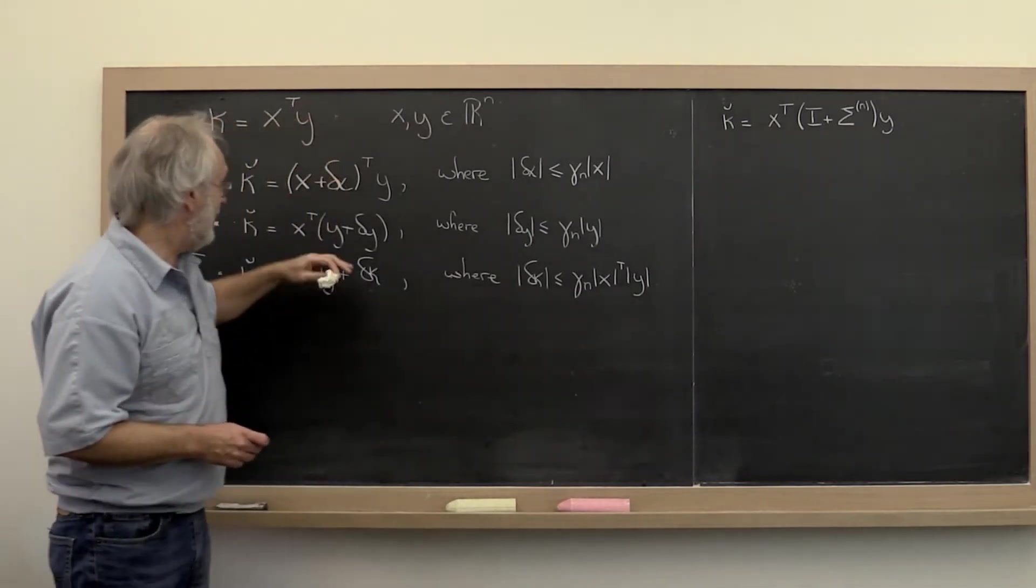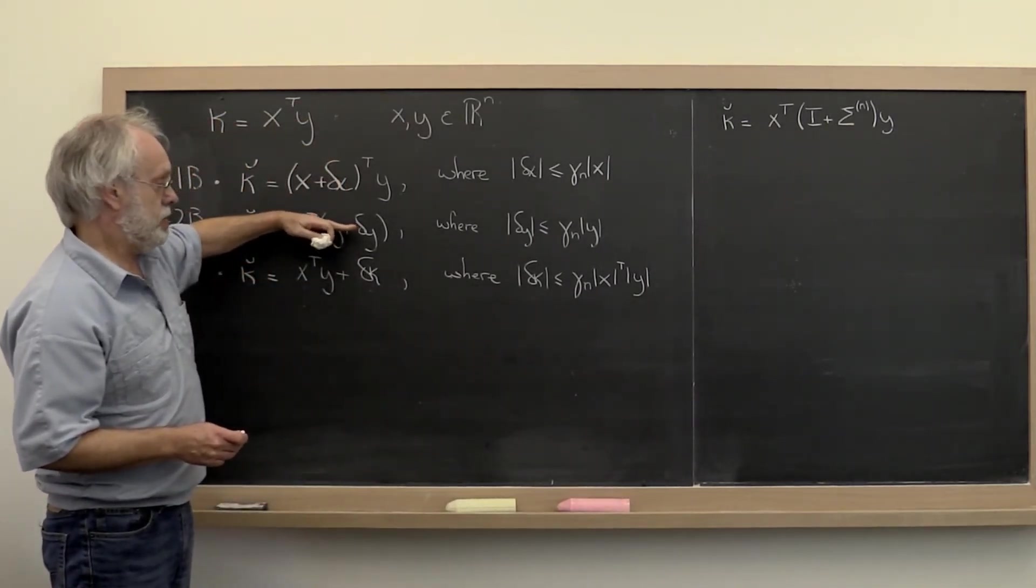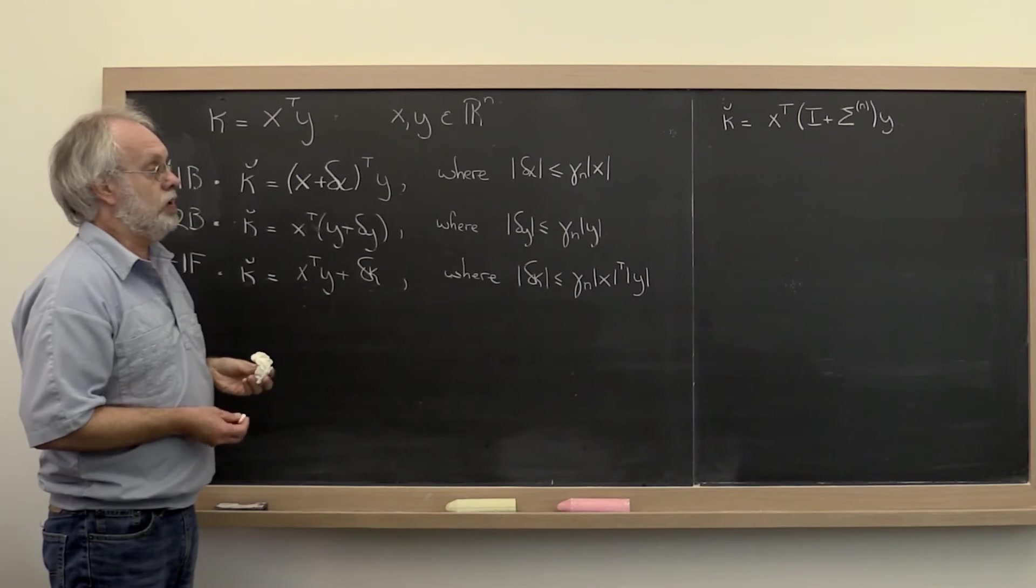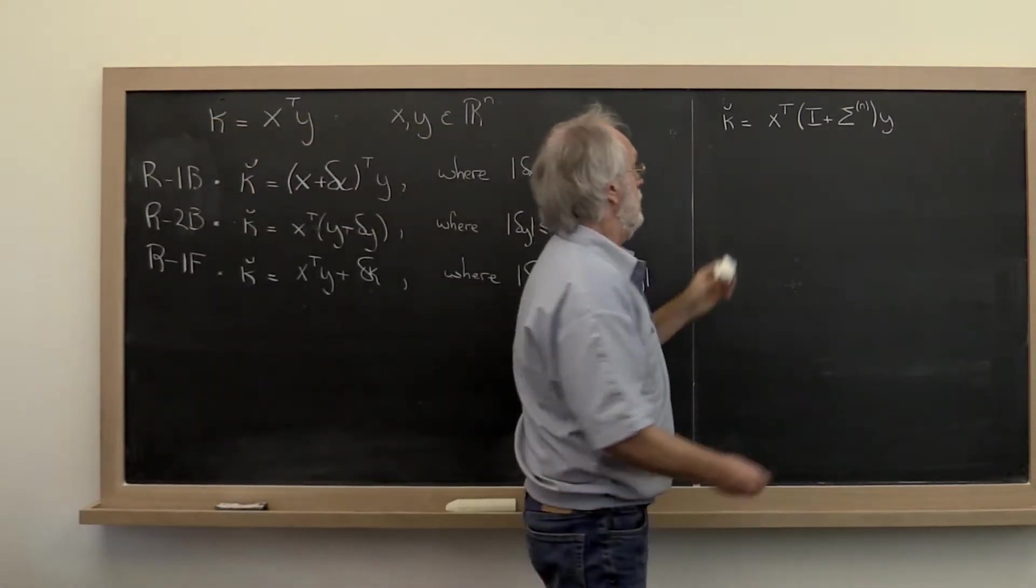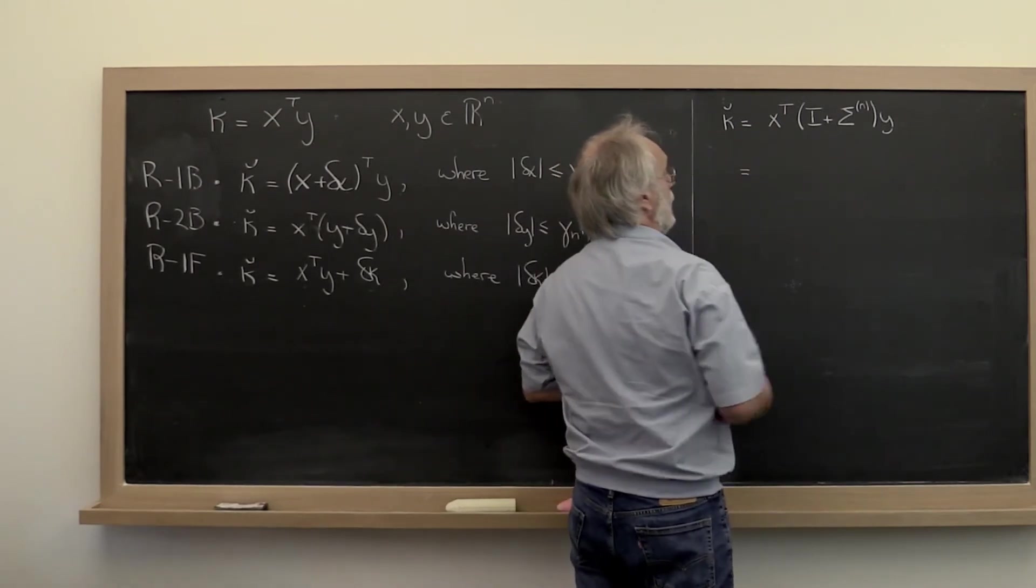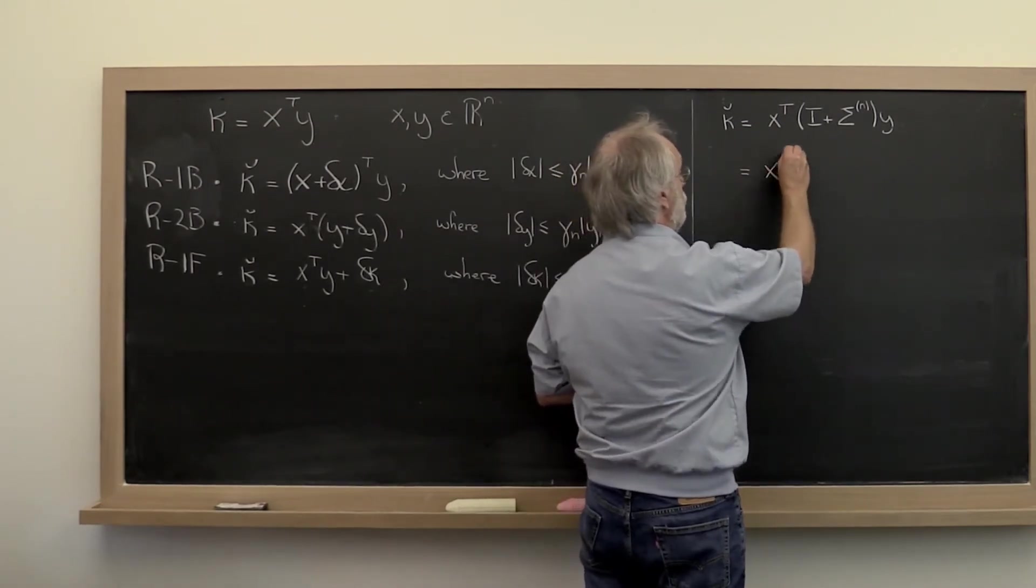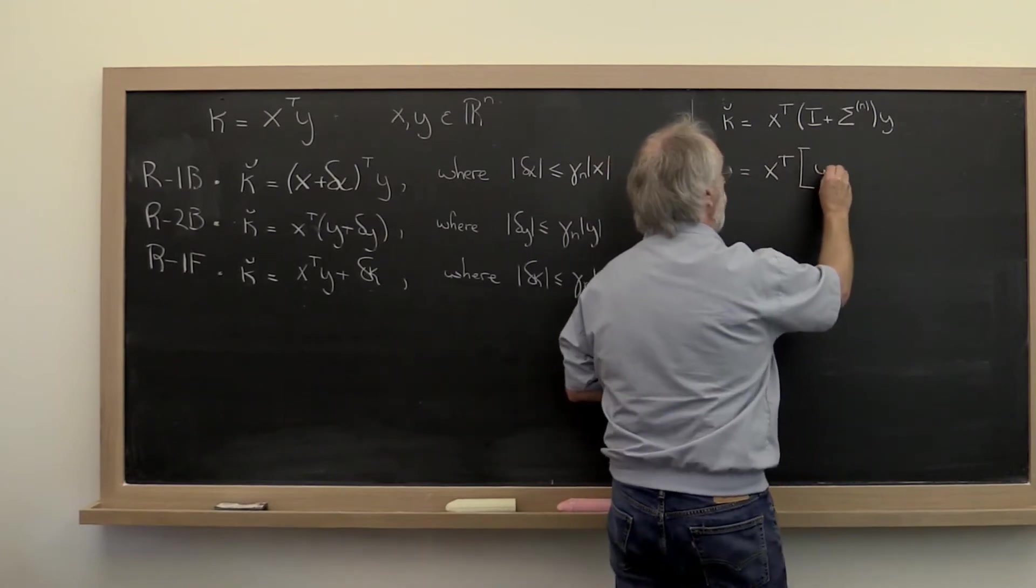So let's focus on this result right here because it's sort of the easiest one to work with. It's pretty obvious that we can take this and we can manipulate this into x transpose times the vector y plus sigma n times y.